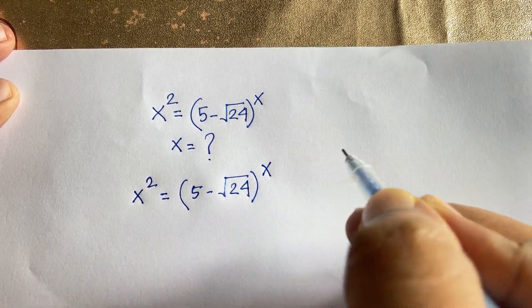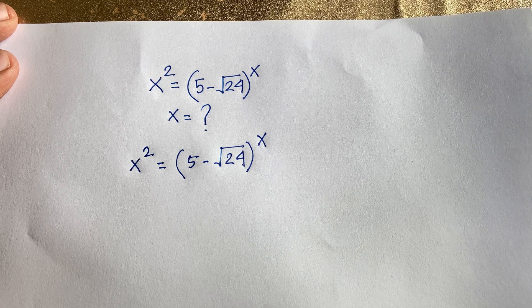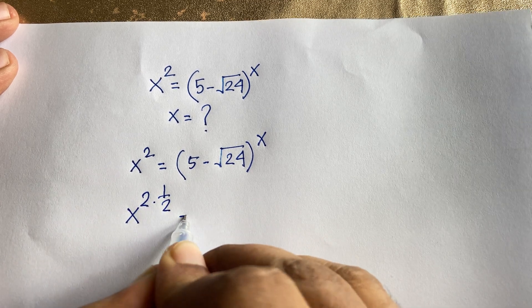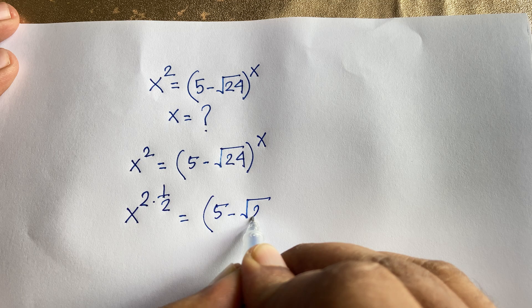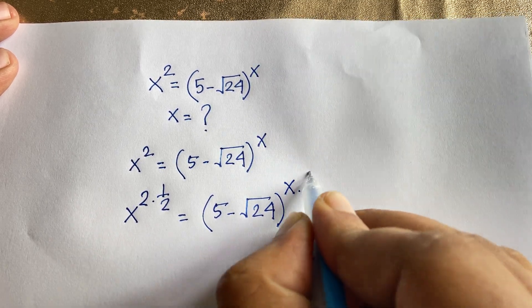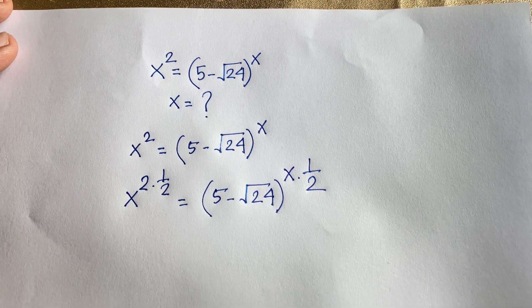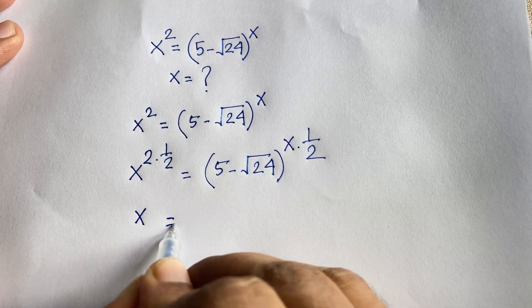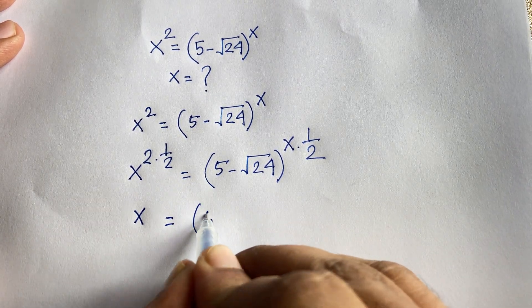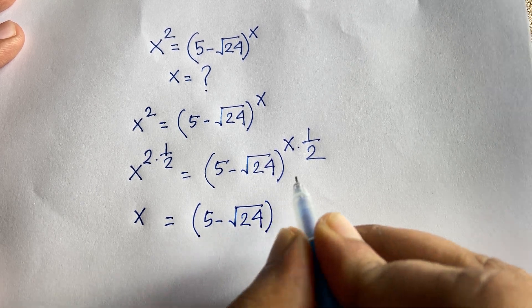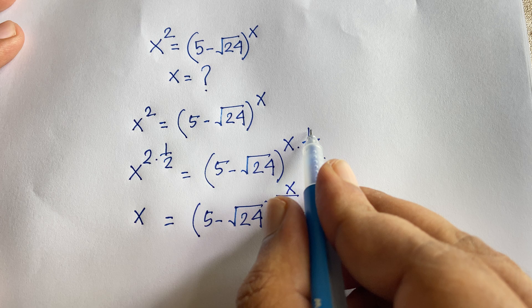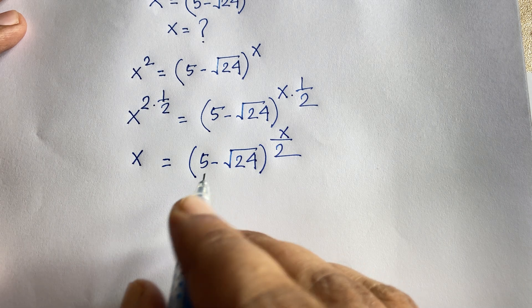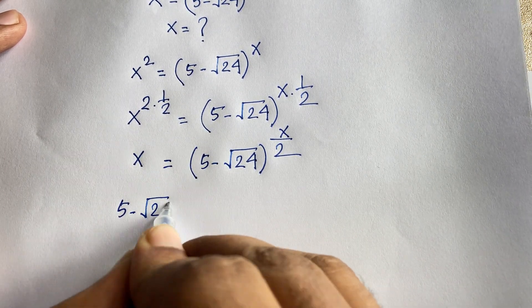To solve this question — x squared equals (5 minus square root 24) to the power x — I apply power 1 over 2 to both sides. So x to the power 2 times 1 over 2 is equal to (5 minus square root 24) to the power x times 1 over 2. Because of that, the 2 cancels, and we find x is equal to (5 minus square root 24) to the power x over 2.